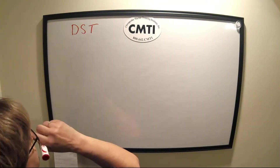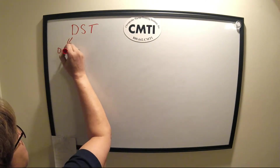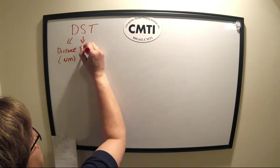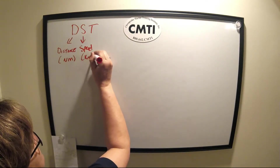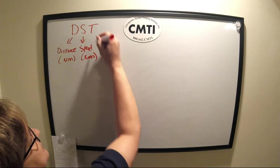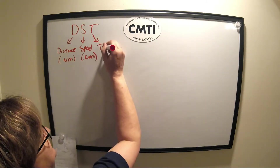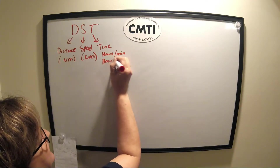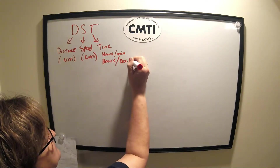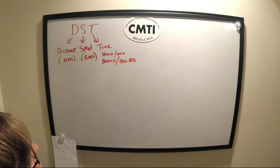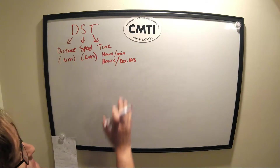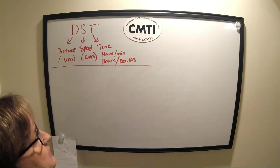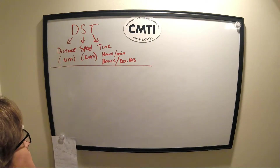D is T — where D stands for distance in nautical miles, S is speed in knots because this is navigation for ships, and T is time, which can be expressed in hours and minutes or decimal hours. We're going to cover decimal hours first, because in order to do a DST triangle we need to be able to express time in various ways to use the calculator.